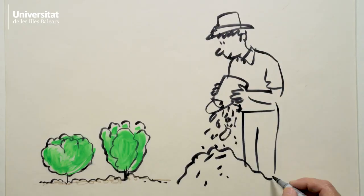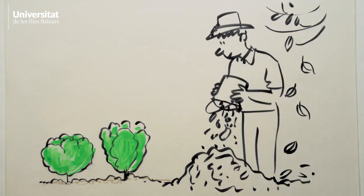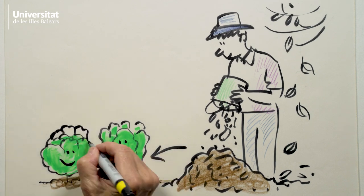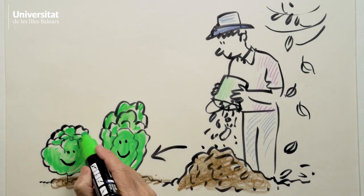A gardener piles up plant remains and manure in order to make compost. Bacteria and fungi decompose it and liberate nutrients. The gardener then puts it on the veggies to make them big and happy.